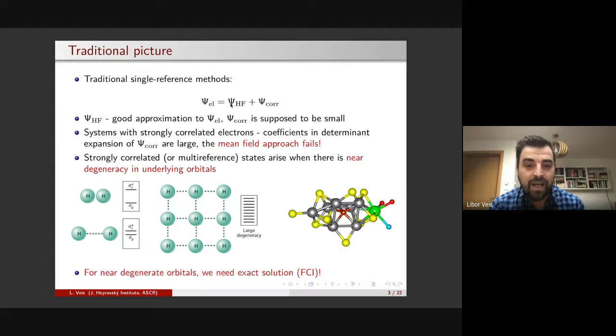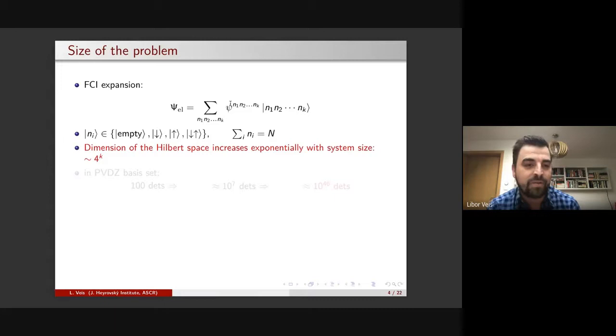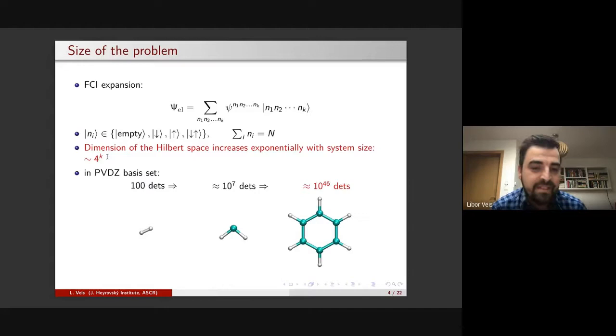So what to do then? Ideally, we need something of a full CI quality. But what does it mean, full CI? Everybody knows it's impossible because of the scaling. If you write the wave function in the full CI expansion, these are the determinants in the occupation basis representation. They can be either empty, alpha, beta, or doubly occupied. Then the number of such configurations, if you have four possibilities and k orbitals, it scales roughly as four to the k. Roughly, you have some constraint on the number of particles, but whatever, it's exponential. So to demonstrate it, if you take the double zeta basis for water, you have something like 10 to the 7 determinants. And if you go to benzene, you already have something like 10 to the 46. And this is not a big step. This is this exponential scaling.